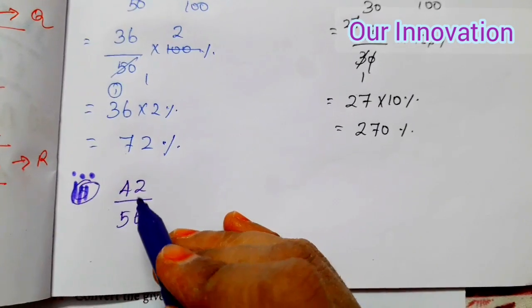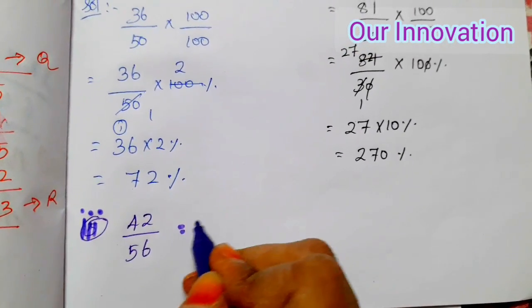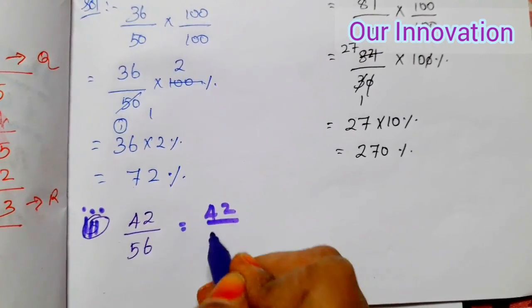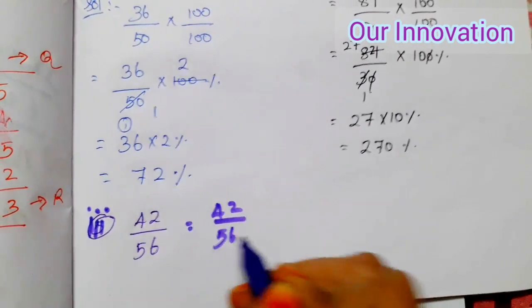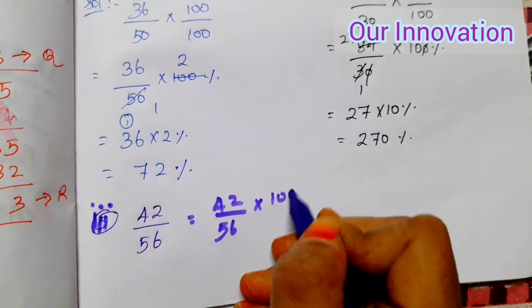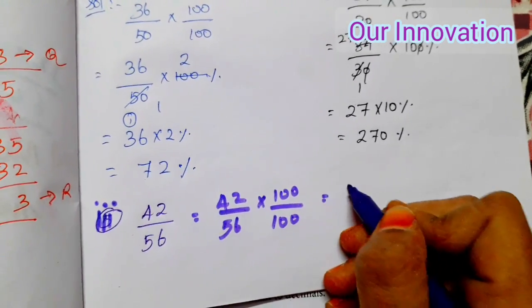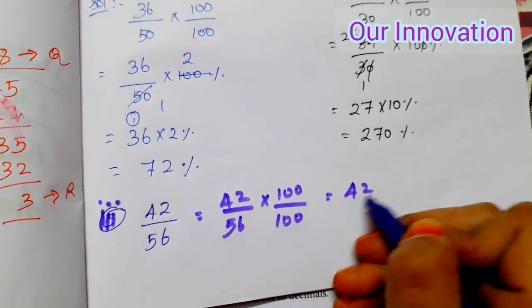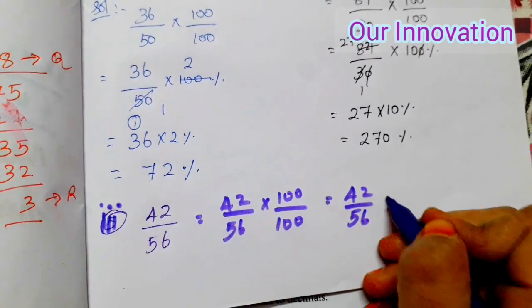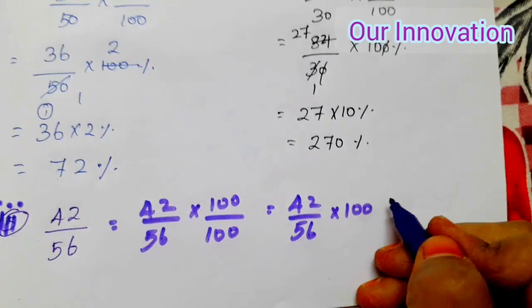Third sum: 42 by 56 into 100 by 100 is equal to 42 by 56 into 100 percentage.